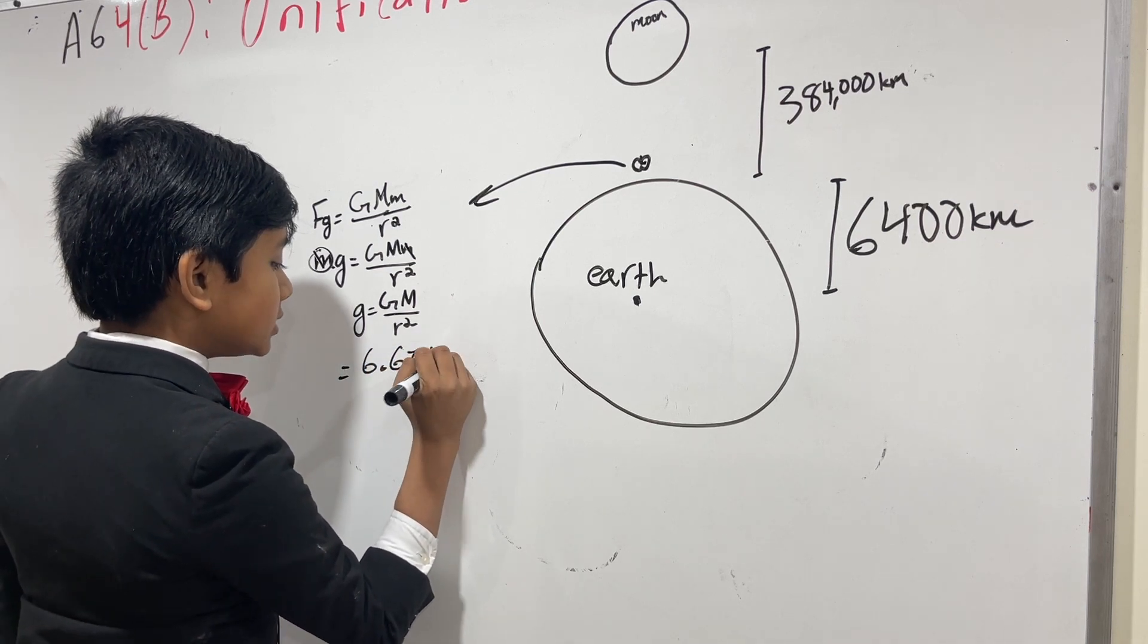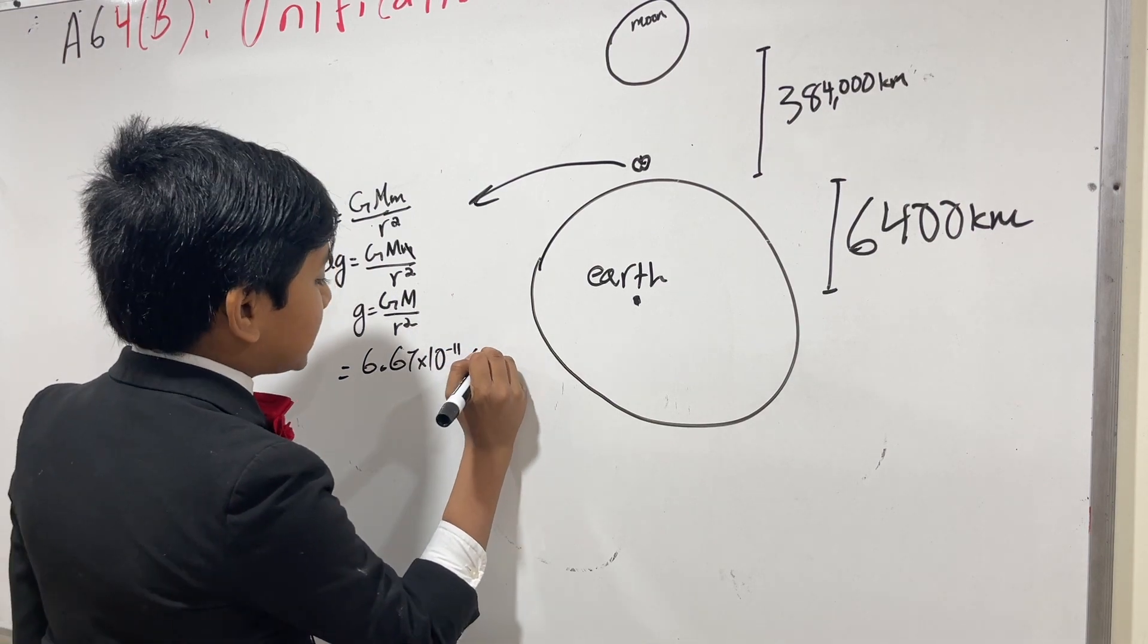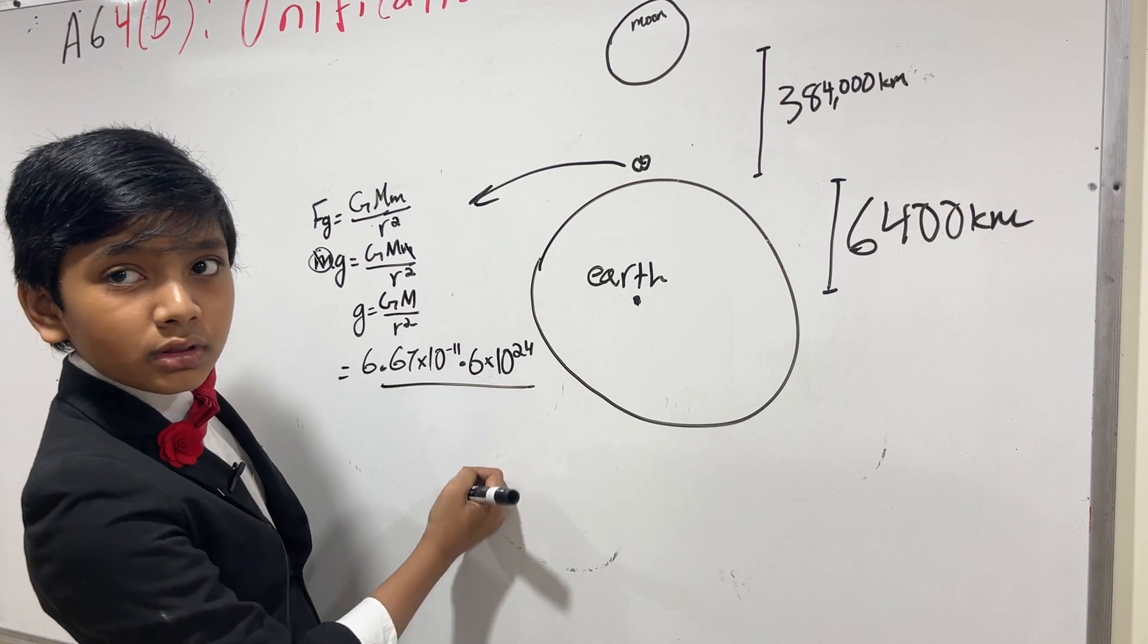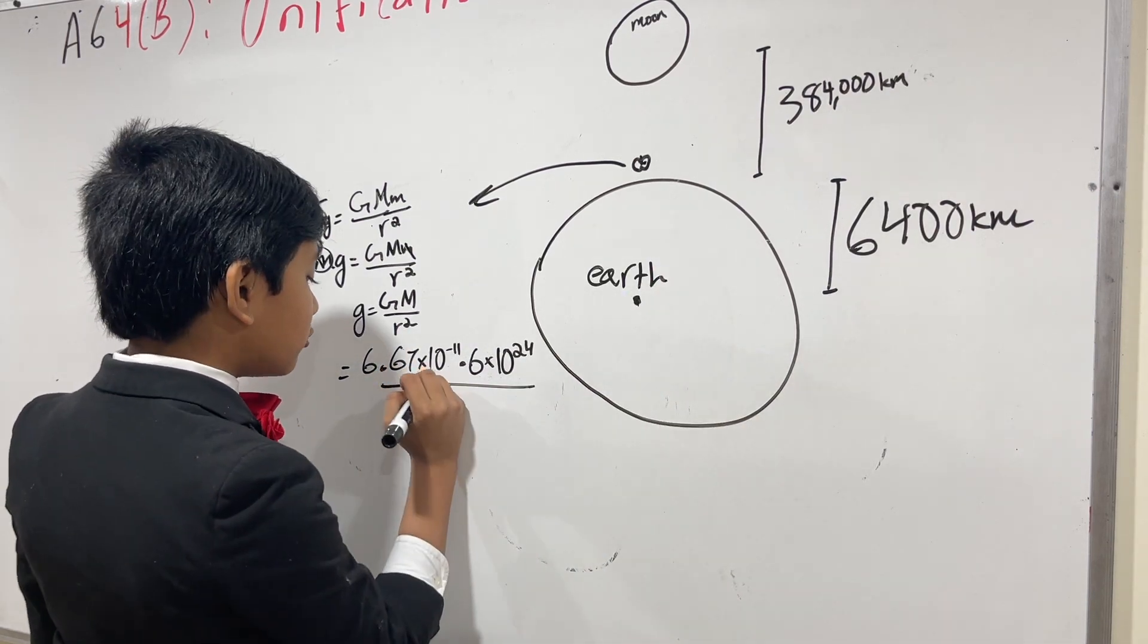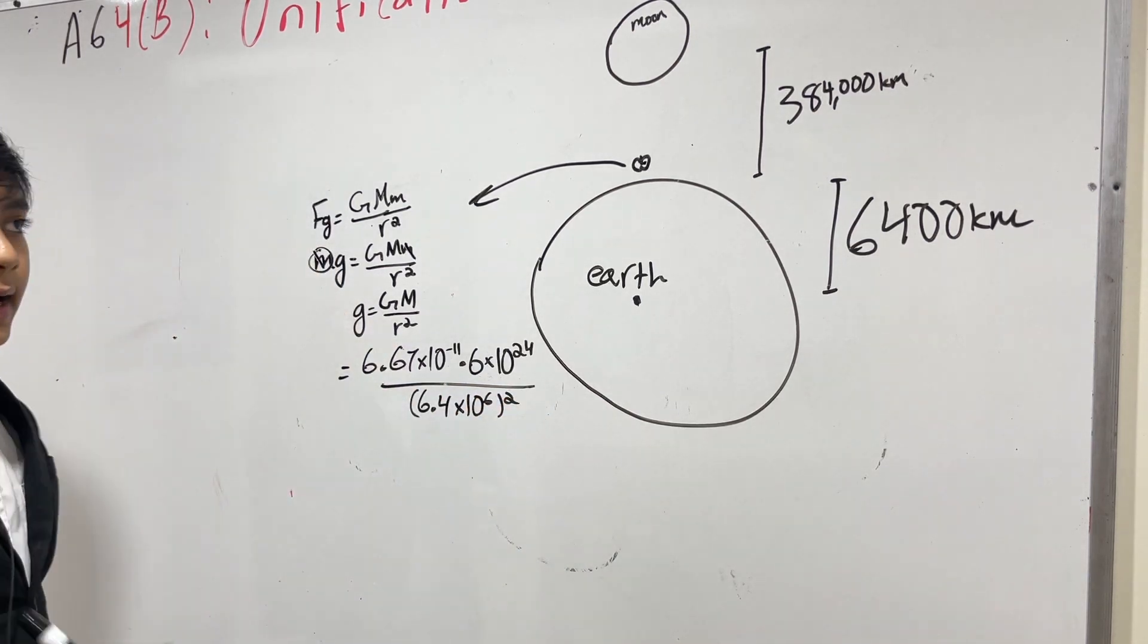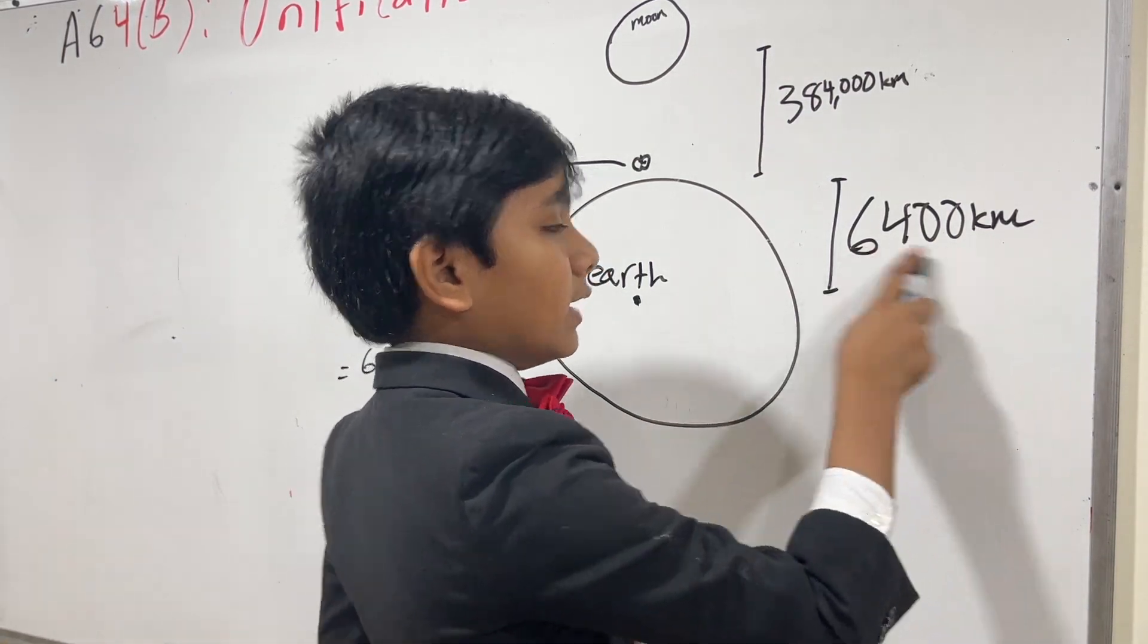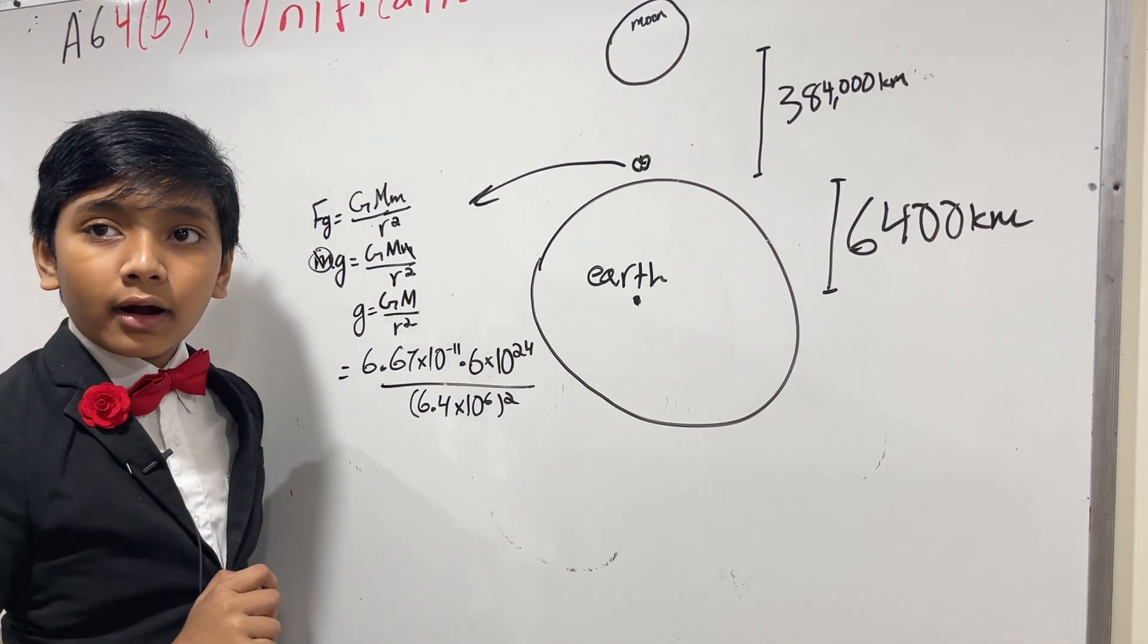So, we have our G on the top. 6.67 times 10 to the minus 11th. Times our M, which is, we'll just say it's 6, even though it's actually 5.98 times 10 to the 24th. And, now, we have r, or actually r squared, which is 6.4 times 10 to the 6th meters squared. And, if it wasn't clear, I'm using meters, not kilometers. That's why this 6,400 is different from this 6.4 million.